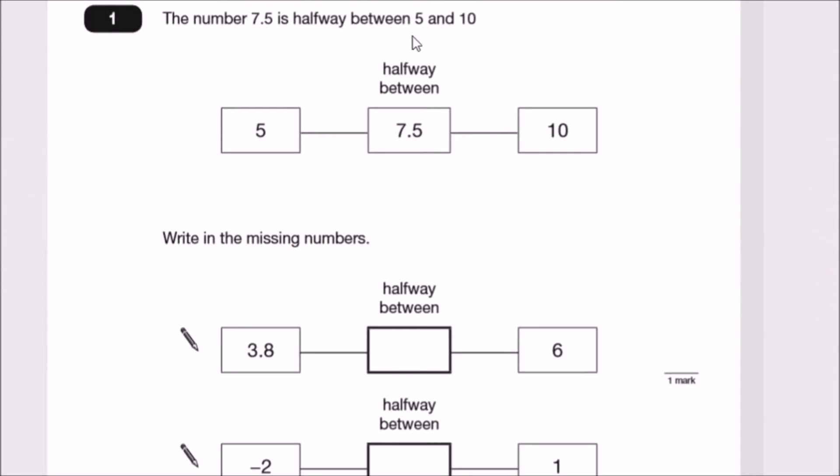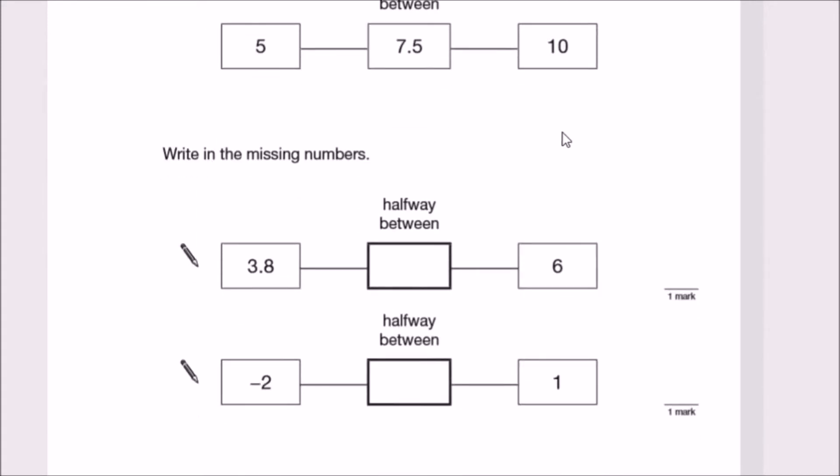The number 7.5 is halfway between 5 and 10. Now, how to calculate the middle halfway between two digits: I would personally add the two numbers up, 5 and 10, and then half it to get a number in between. It's like finding the mean or average.